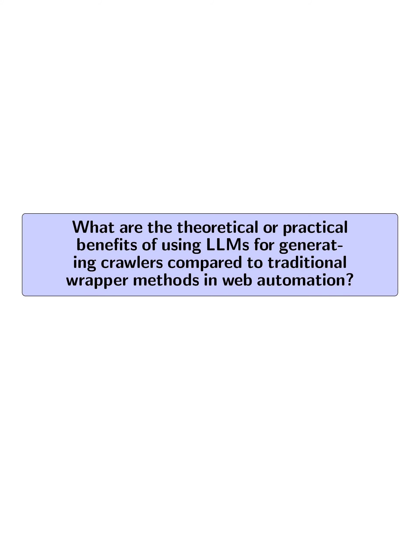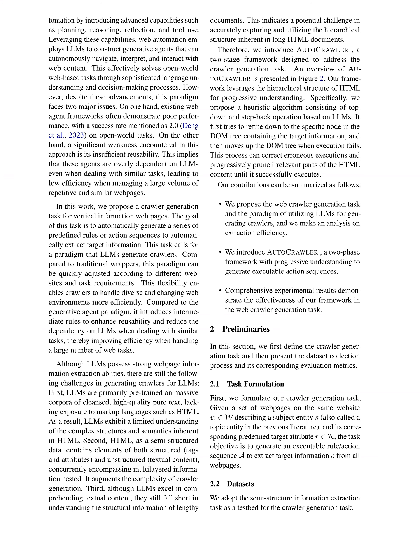What are the theoretical or practical benefits of using LLMs for generating crawlers compared to traditional wrapper methods in web automation? LLMs introduce advanced capabilities such as planning, reasoning, reflection, and tool use, enabling them to construct generative agents that can autonomously navigate, interpret, and interact with web content. This allows for more sophisticated language understanding and decision-making processes, which is crucial for handling open-world web-based tasks effectively.